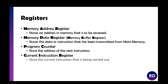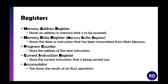There are several registers you need to know. The MAR — memory address register — stores an address in memory that is to be accessed. The MDR (or MBR) — memory data register — stores the data or instruction transmitted from main memory. The program counter stores the address of the next instruction, so if you're on instruction three, it stores instruction four. The CIR — current instruction register — stores the current instruction being carried out. And the accumulator stores the last result of an ALU operation; for example, if you did five plus five, the accumulator would hold ten until another ALU operation ran.